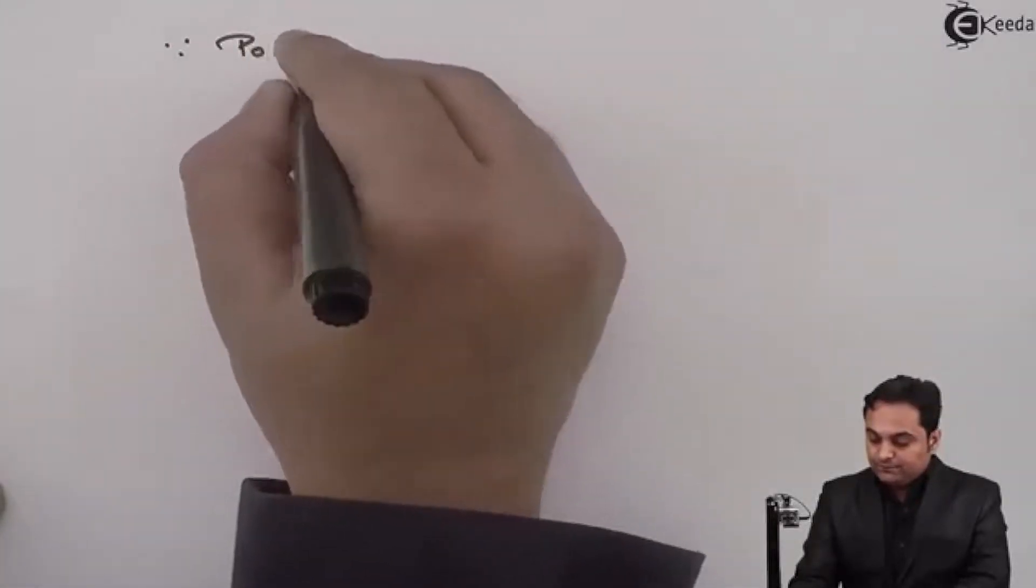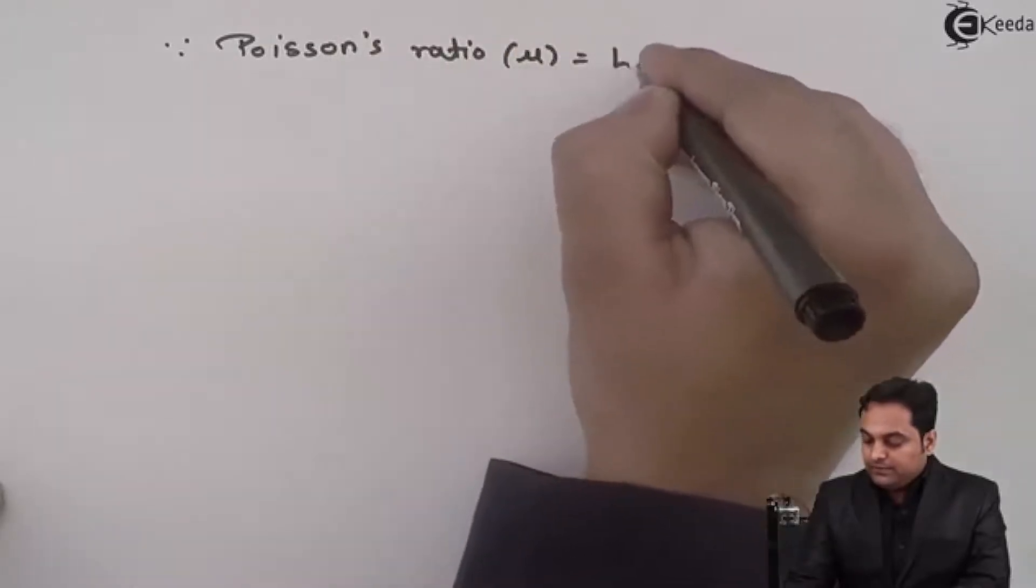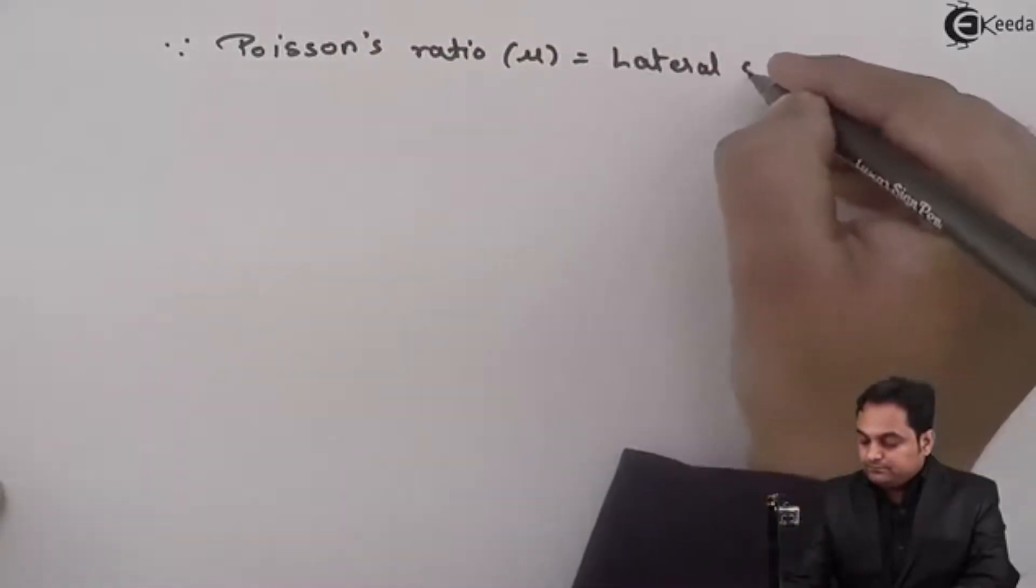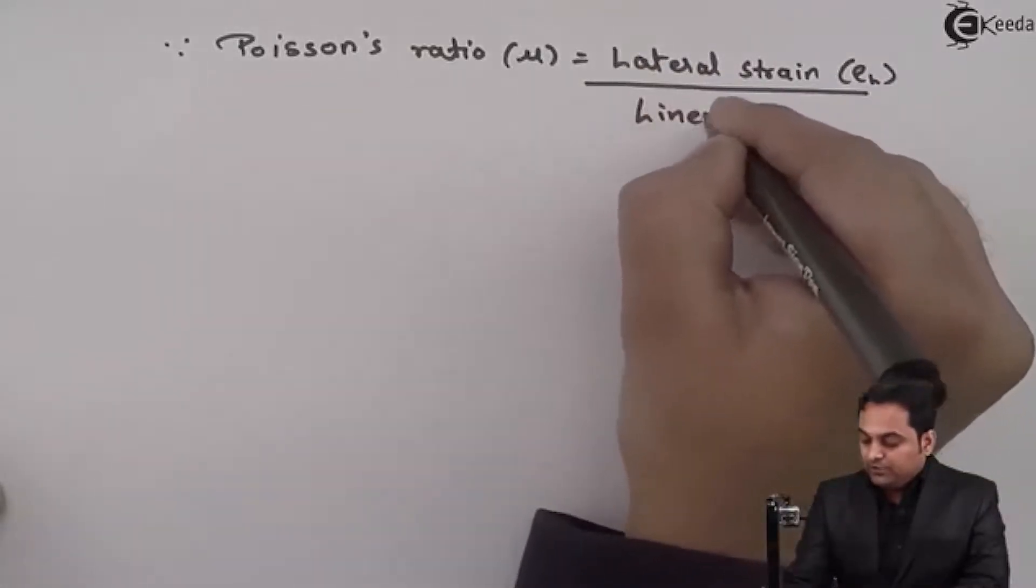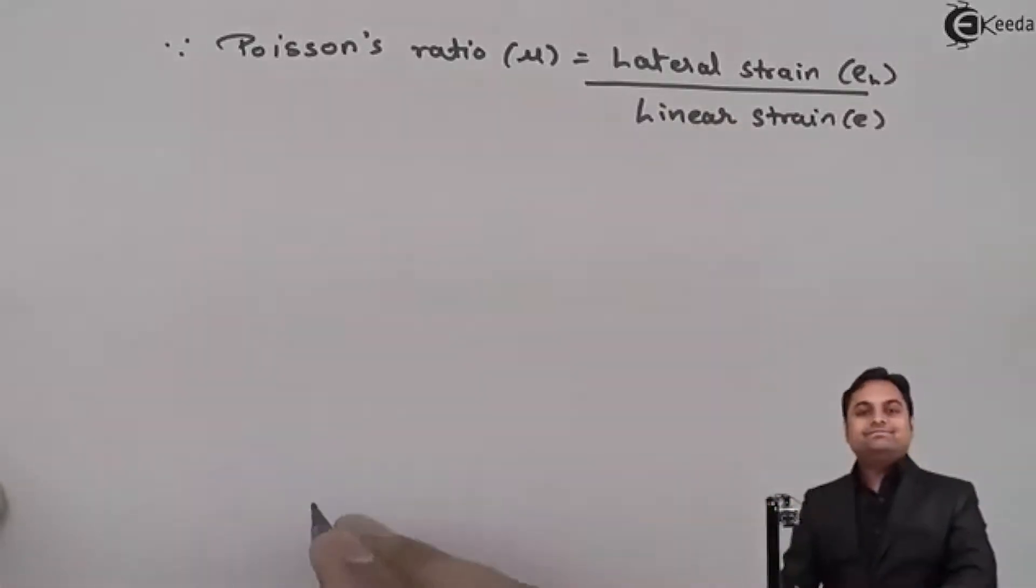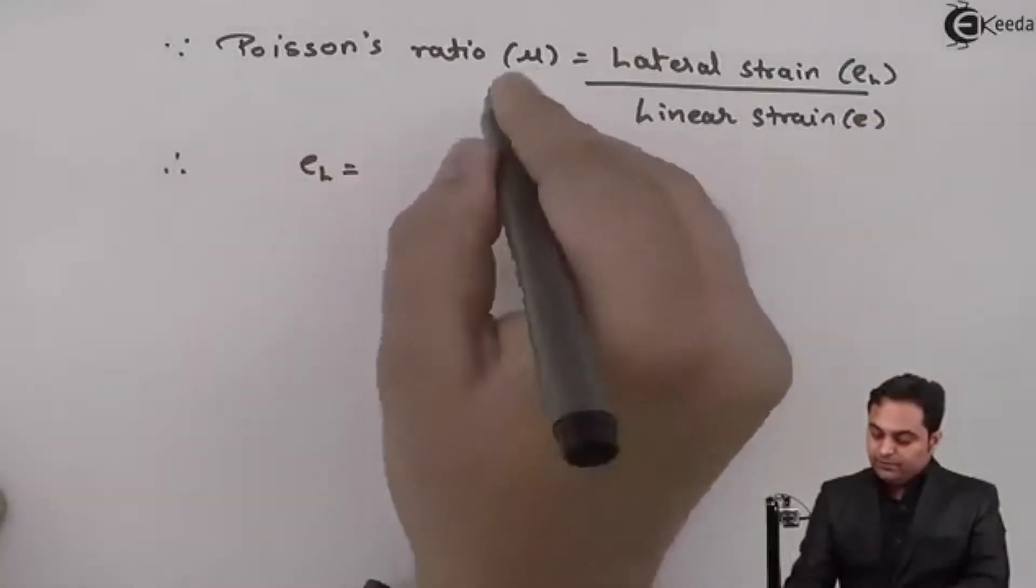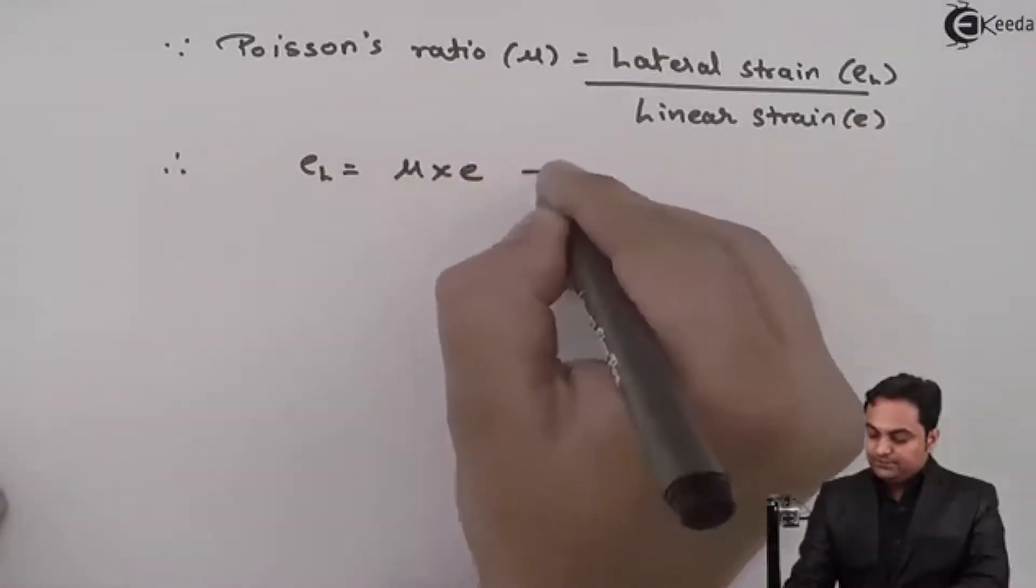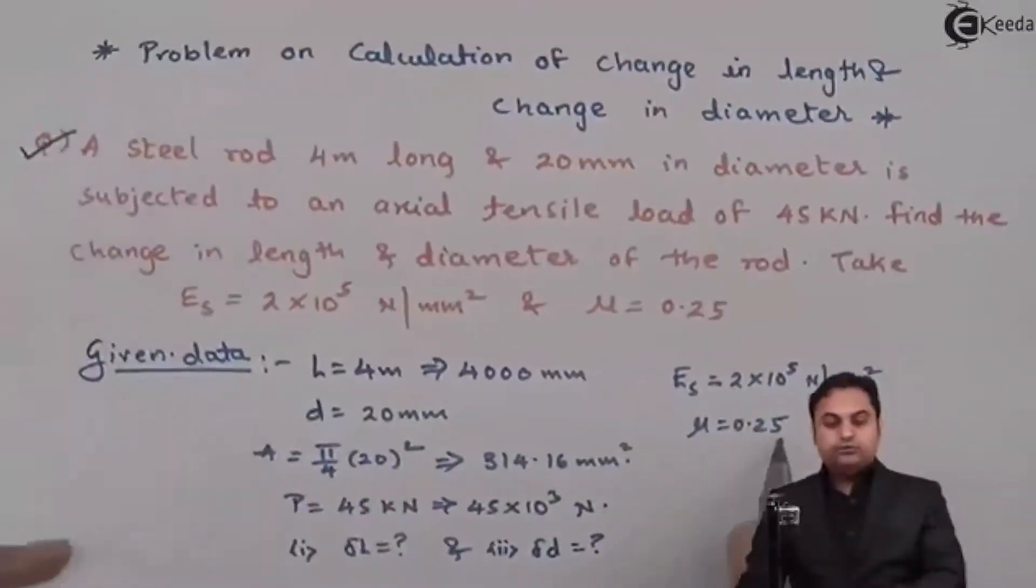So for that we would be using the concept of lateral strain. And here I will find lateral strain in this way that since Poisson's ratio μ is equal to lateral strain εL upon linear strain ε.